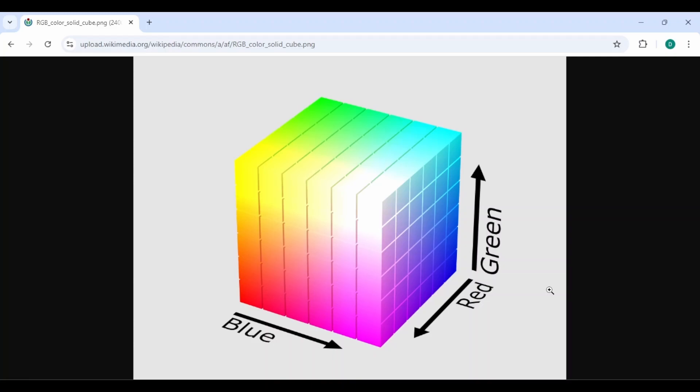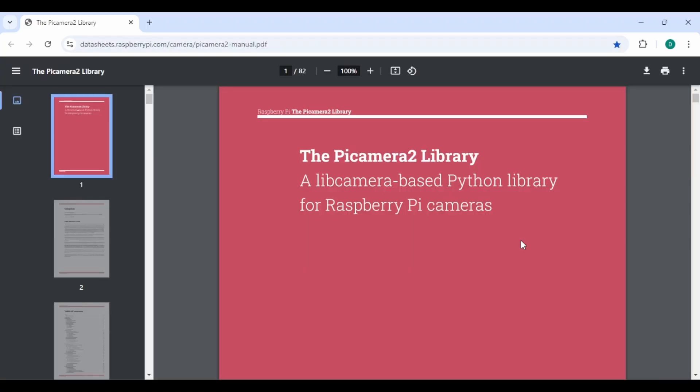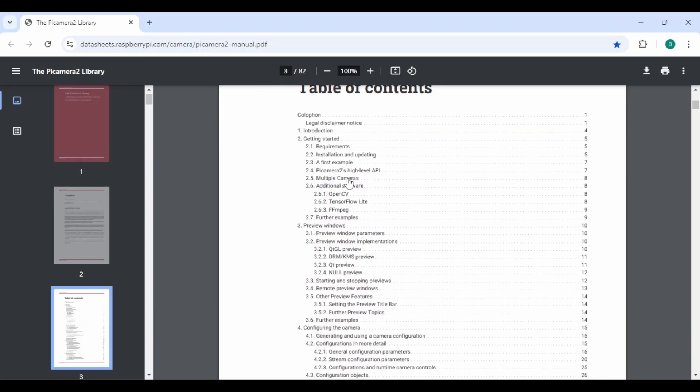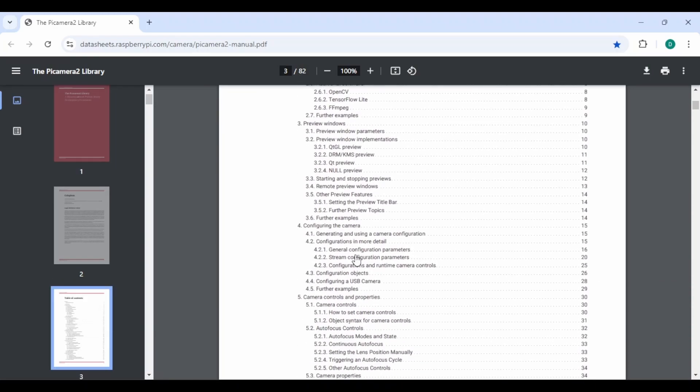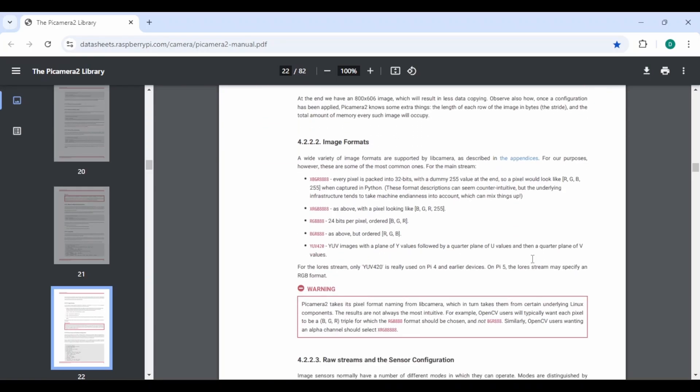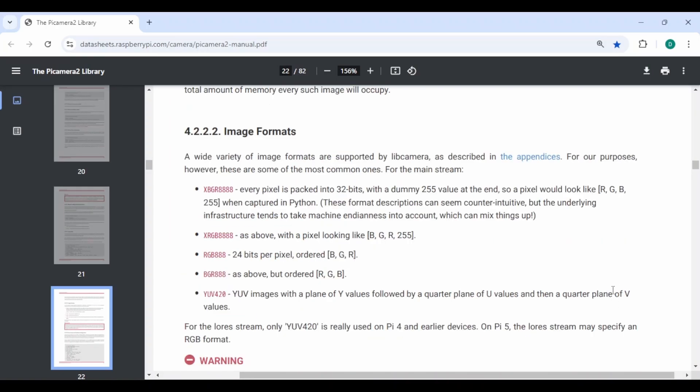So now let's talk about the Raspberry Pi camera settings. This is the PiCamera2 library which is libcamera-based Python library for Raspberry Pi cameras. This has a whole table of contents with a lot of information. If we go to section 4.2.2 and then we go to image formats, you can see the array of formats that are offered.